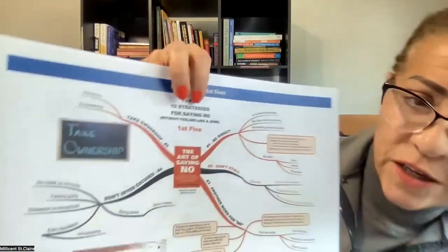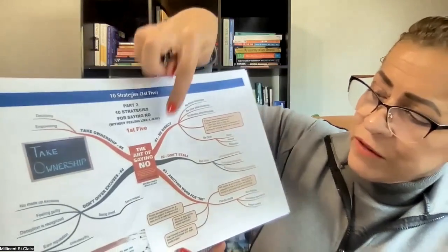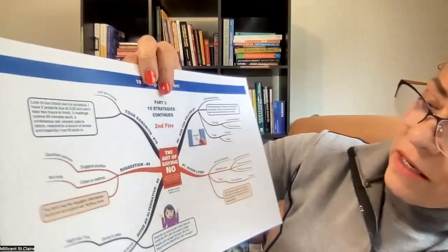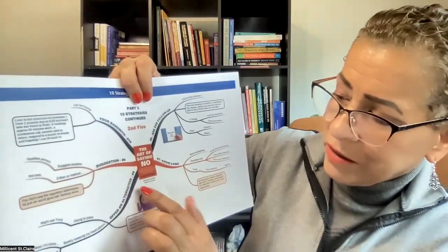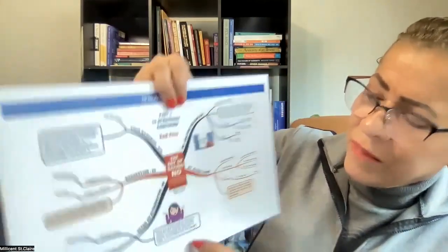Ten strategies for saying no — detail and how-to information. The first five: be direct, don't stall, another word for no, don't offer excuses, take ownership. The second five: ask for follow-up, avoid lying, another alternative suggestion — instead of just saying 'all right I'll do the job' when you don't want to and don't know how to say no. And then your bandwidth. This is an example of how I blew out a book and turned it into a webinar for a specific purpose.